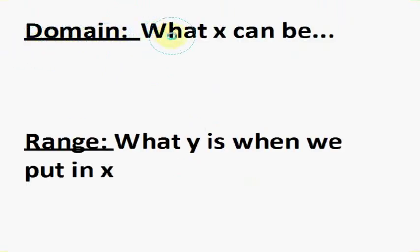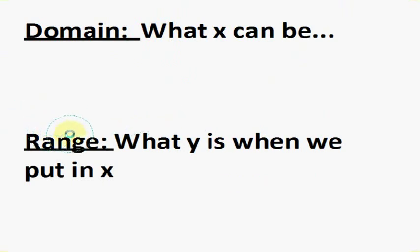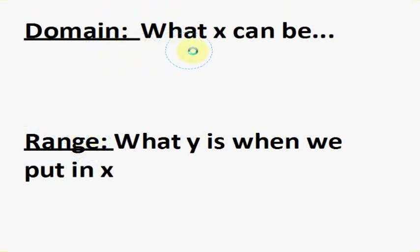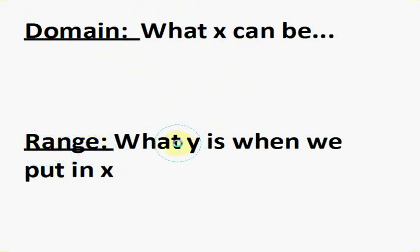The domain is simply what x can be — anything that would not make the function go undefined is within the domain. The range, on the other hand, is what y can be once we input the domain. Even though y would not be undefined at certain points, if x is not within the domain, then we do not have the range that corresponds with that x. So y is what we get when we put in x, which x is in the domain.